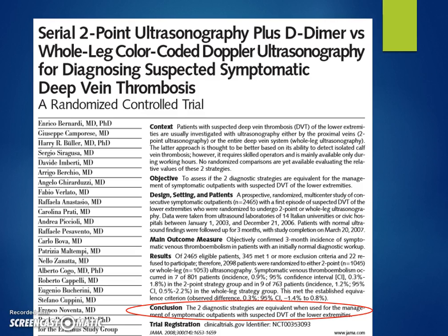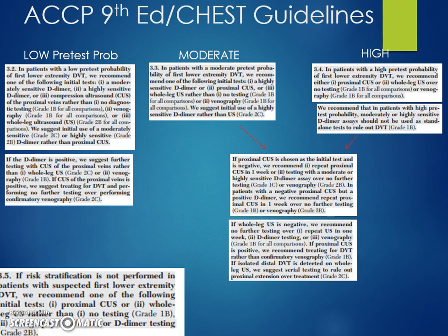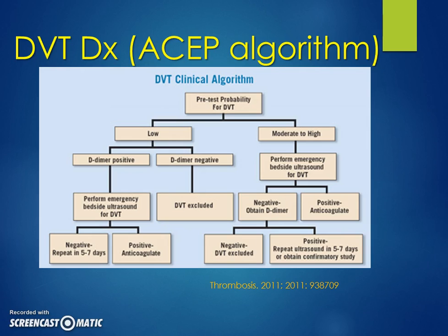The most robust evidence comes from a JAMA article of over 2,000 patients showing no difference between those randomized to a whole-leg ultrasound strategy versus a two-zone technique with D-dimer testing. The ACCP and ACEP guidelines have incorporated this evidence, showing how to use bedside ultrasound to full advantage.